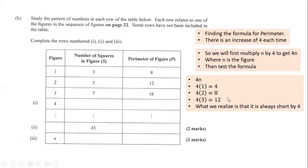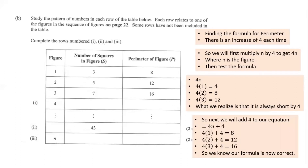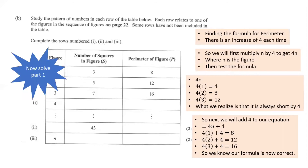We're short by a consistent 4 each time, so we try 4n+4 and test: 4(1)+4=8 ✓, 4(2)+4=12 ✓, 4(3)+4=16 ✓. The formula is correct. For row 1, the perimeter of figure 4 is 4(4)+4 = 16+4 = 20.